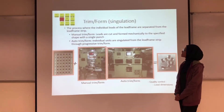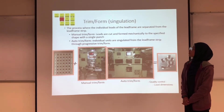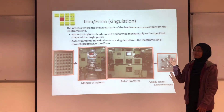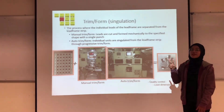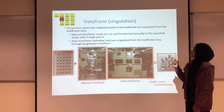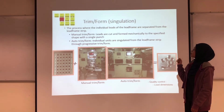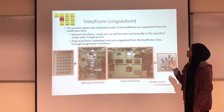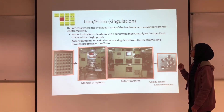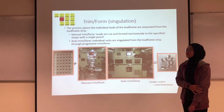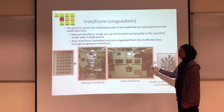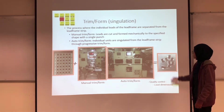The next process is trim and form. This is the process where the individual leads of the lead frame are separated from the lead frame strip. There are two types of trim and form: manual and auto. In manual, leads are cut and formed mechanically to a specified shape with a single punch. In auto trim and form, individual units are singulated from the lead frame through progressive trim and form. This shows the machine for manual trim, auto trim and form, and the final product.